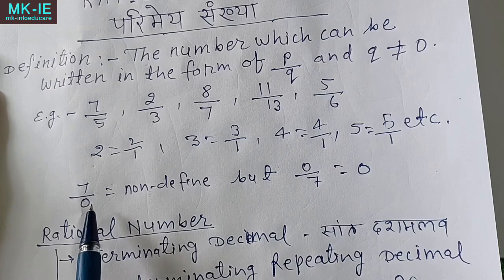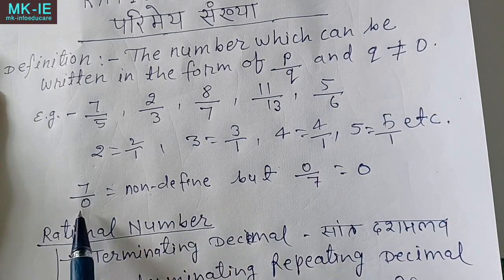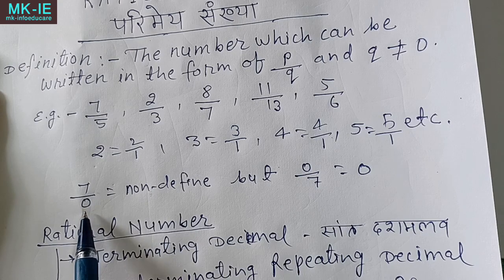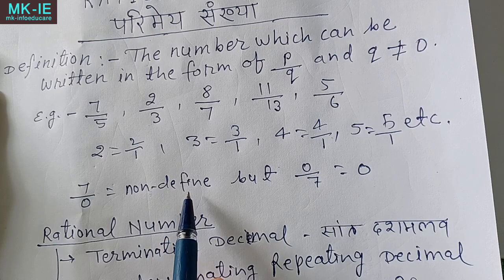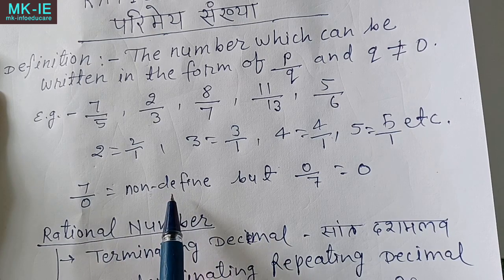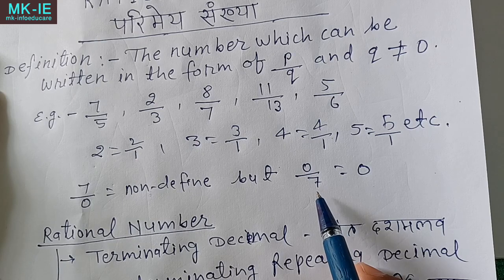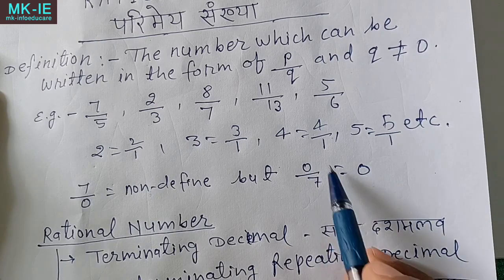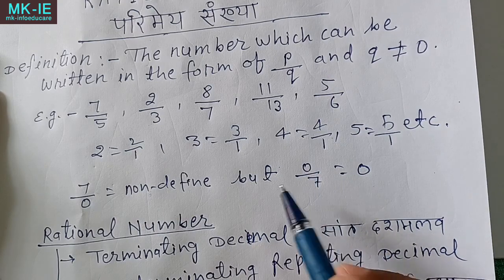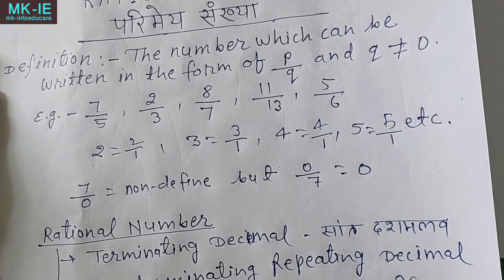For example, 2 can be written as 2/1, 3 as 3/1, 4 as 4/1, 5 as 5/1 — so this will be a form of rational number. Now here, 7 by 0 is given — this will be non-defined, because the value of the denominator is 0. When the denominator is 0, the value is non-defined. But if we write 0 by 7, with 0 in the numerator, then the value is 0, so this will be a rational number. But 7 by 0 will not be a rational number.